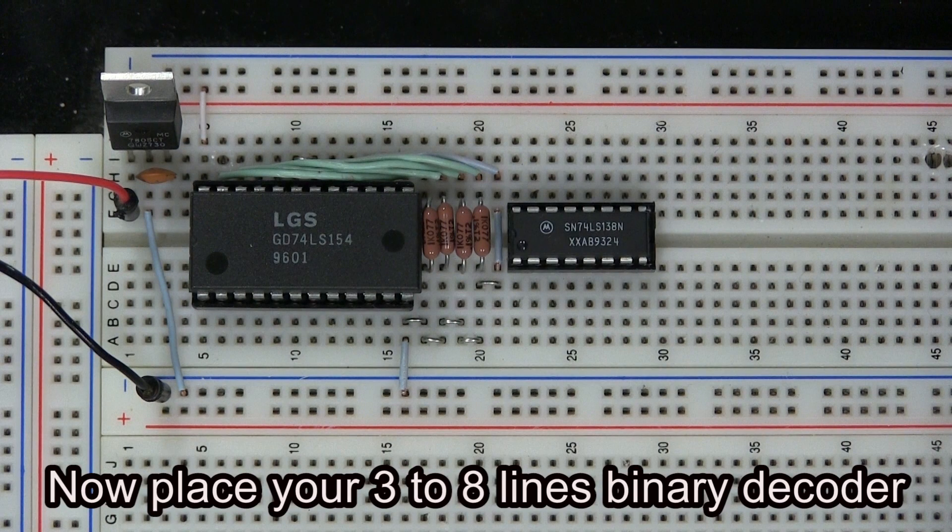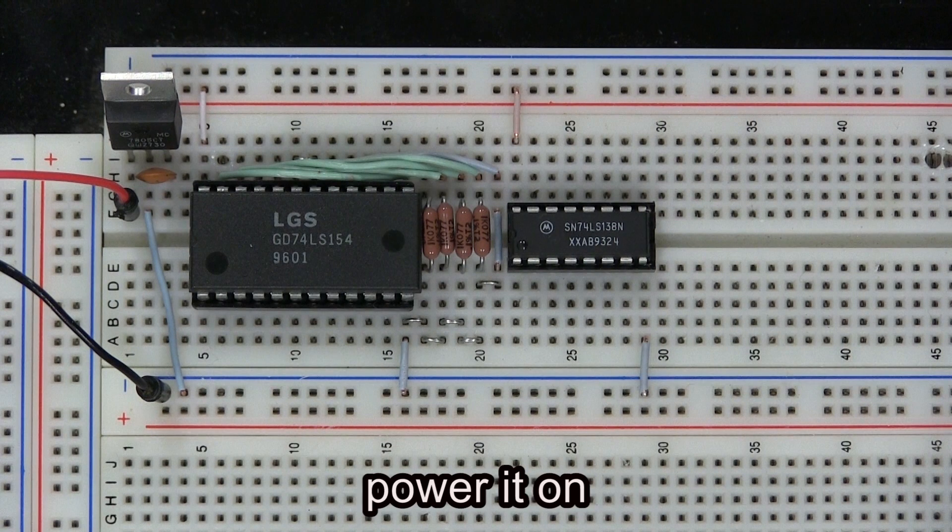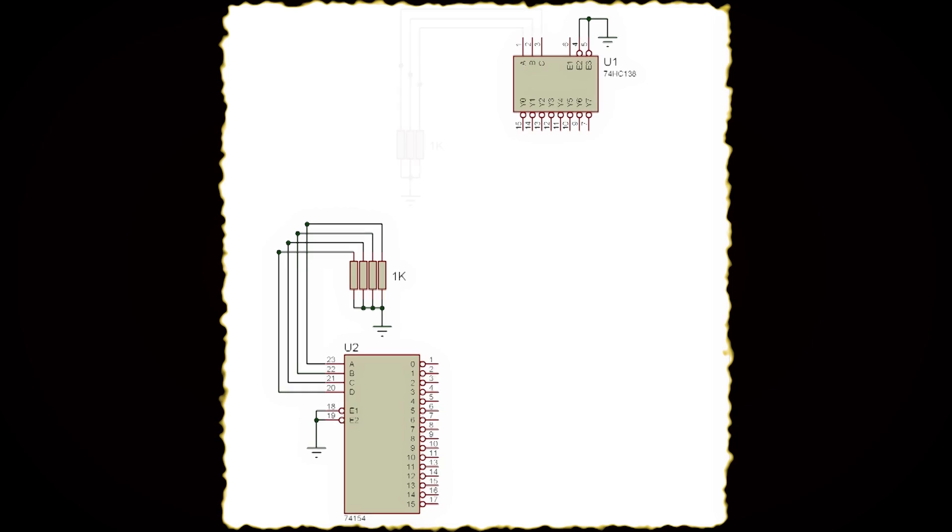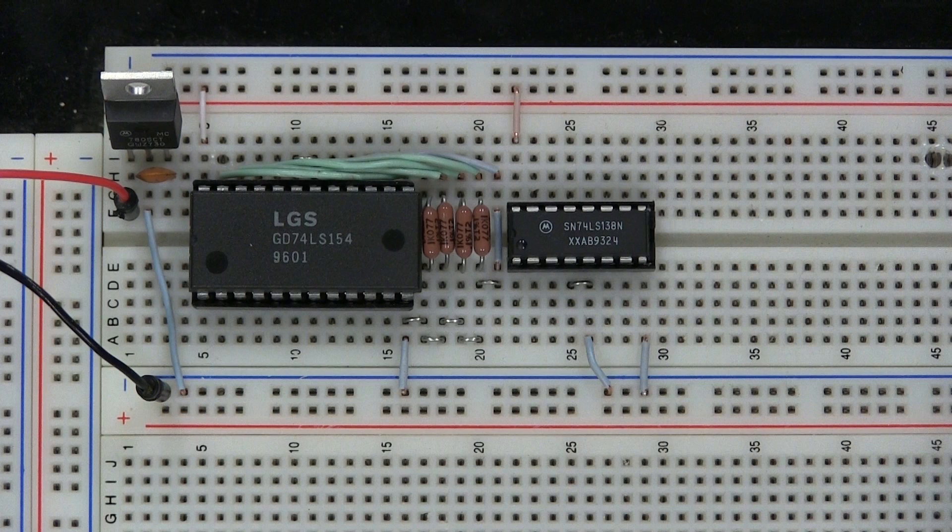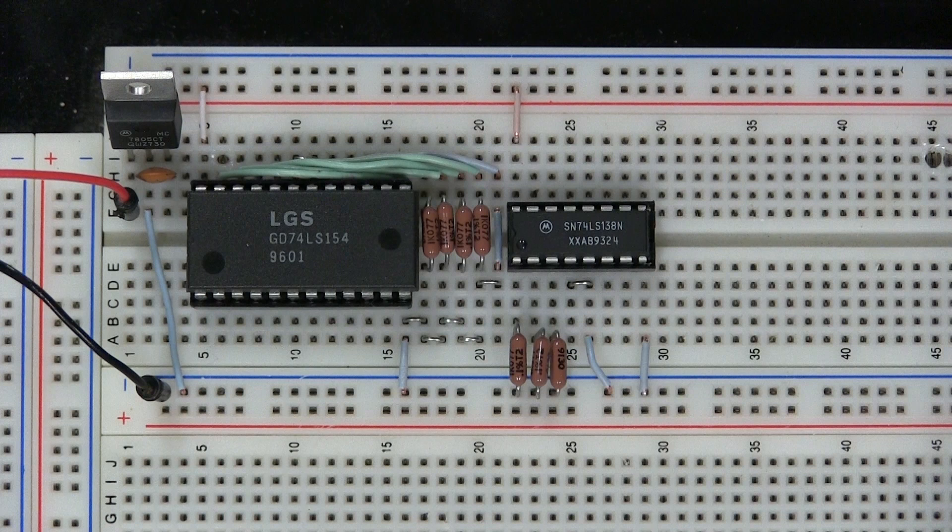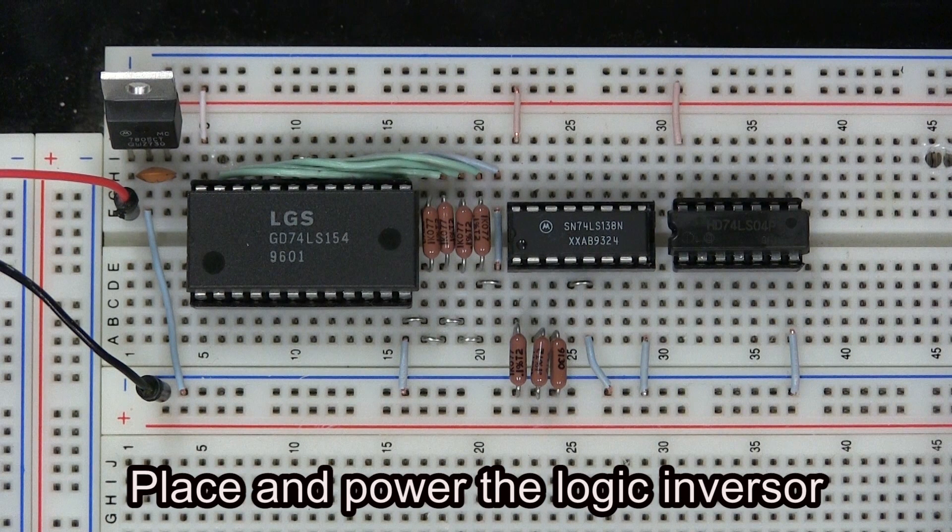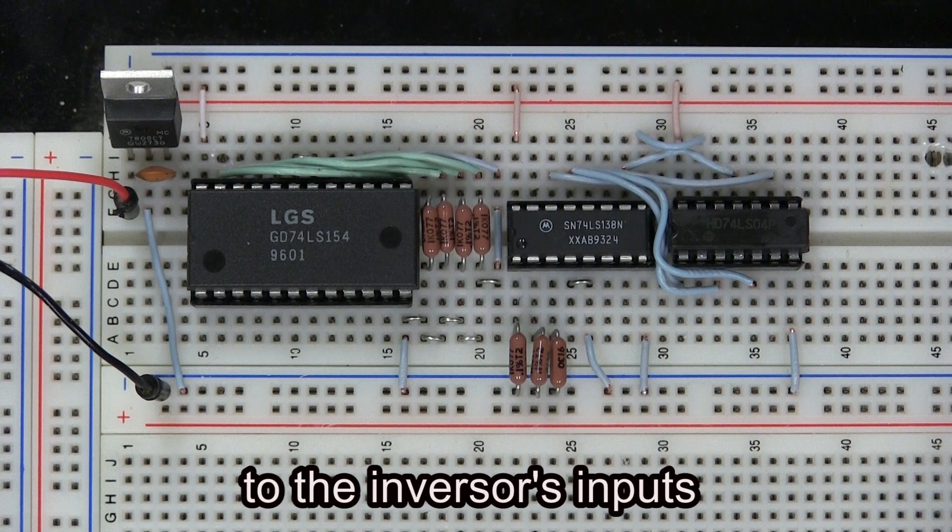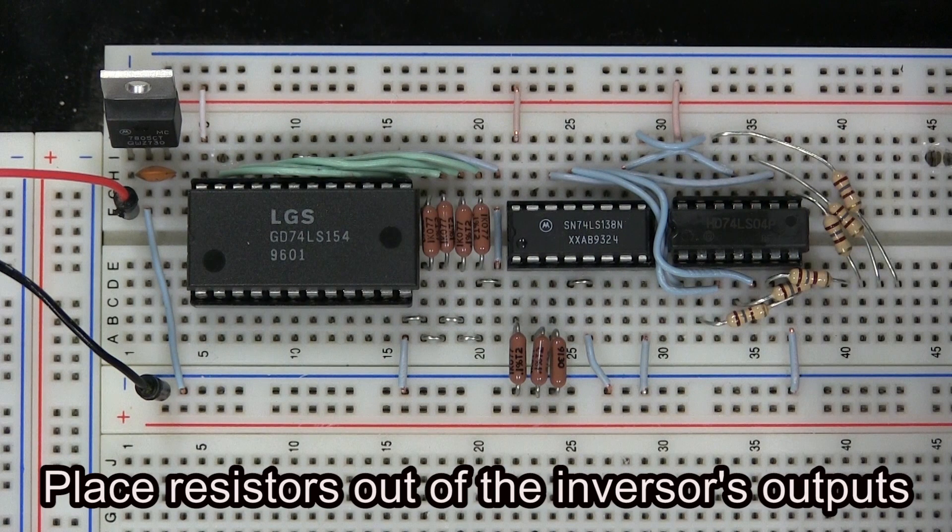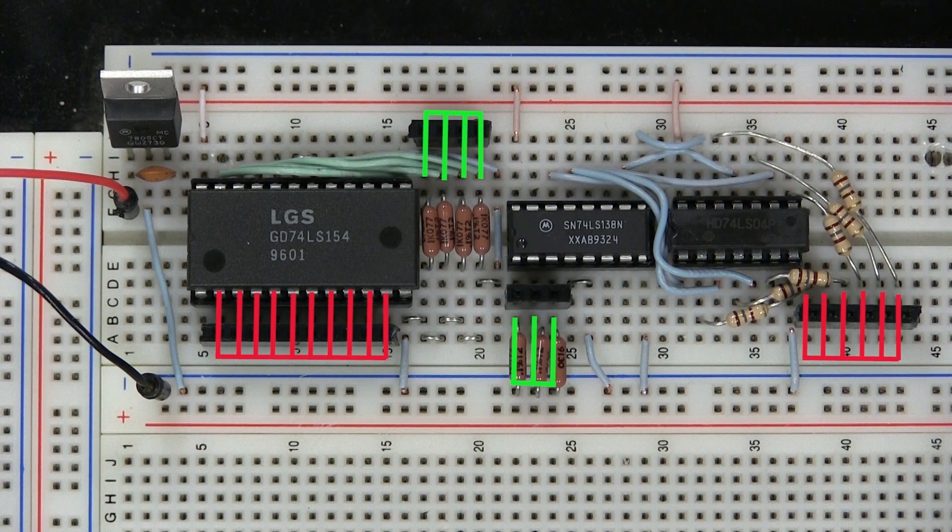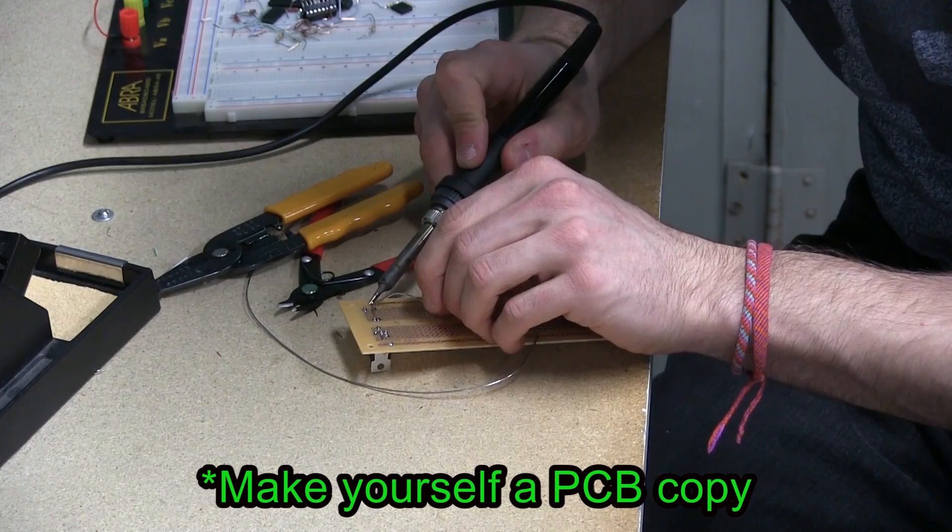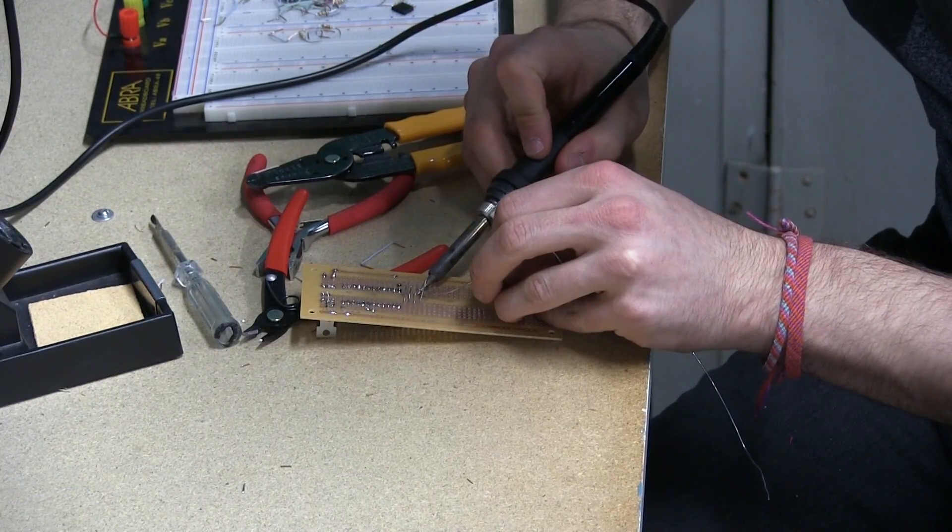Now place your 3 to 8 lines binary decoder and power it on. Connect the enabled pins to ground. Inputs ABC are wired to ground via resistors. Place and power the logic inversor. Connect the decoder's outputs to the inversor's inputs. Place resistors out of the inversor's outputs. Connect the decoder's outputs to the inversor's inputs.